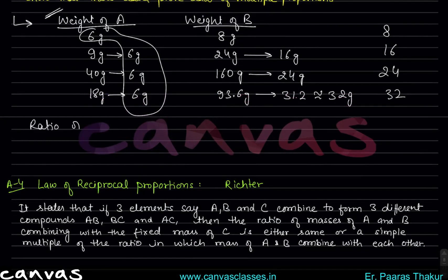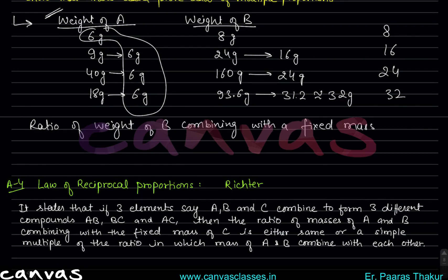The ratio of weight of B combining with a fixed mass of A comes out to 1:2:3:4. Note that this type of question at this basic level is unlikely to appear in exams, but it is important for building foundational understanding.